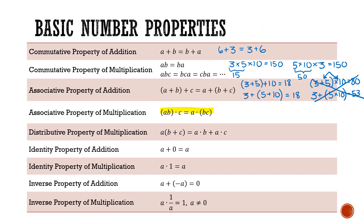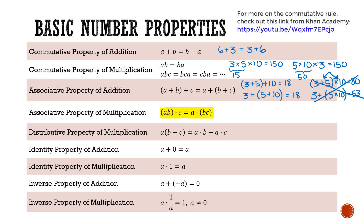Next we have the associative property of multiplication. Once again, (AB) times C equals A times (BC). This is saying the order does not matter, and what we do first in brackets does not matter, because we have multiplication within the brackets and multiplication outside. To illustrate: 4 times 5 times 2 gives 4 times 5 is 20, times 2 is 40. I get the same result with 4 times (5 times 2): that's 4 times 10, which is 40.